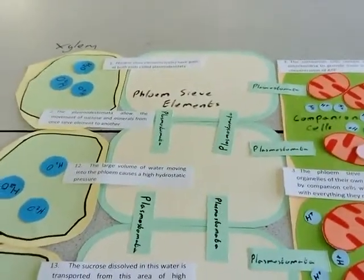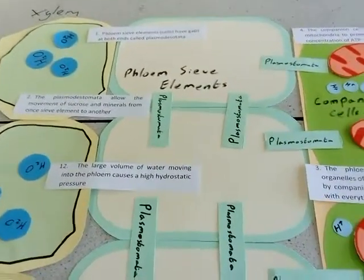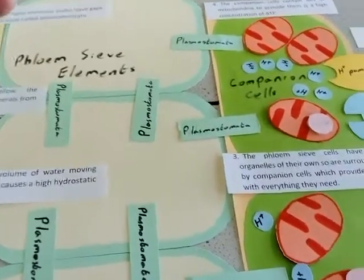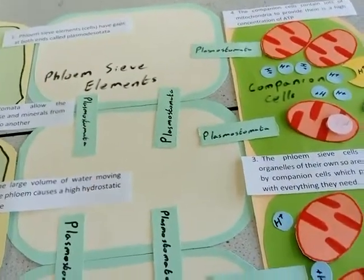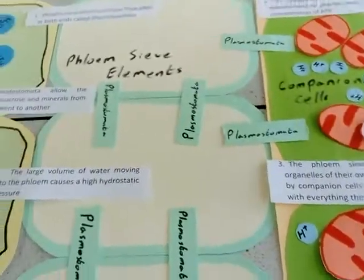Translocation is the movement of sucrose through the phloem sieve element from a source to a sink.